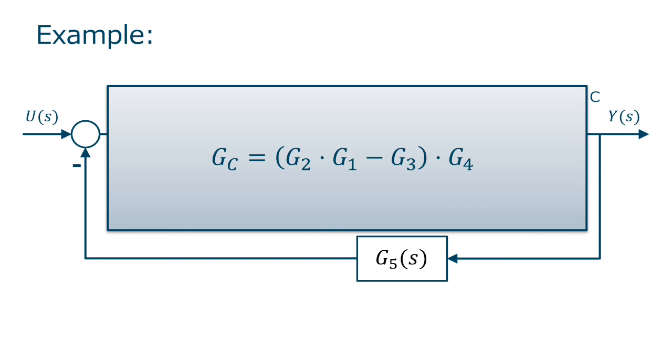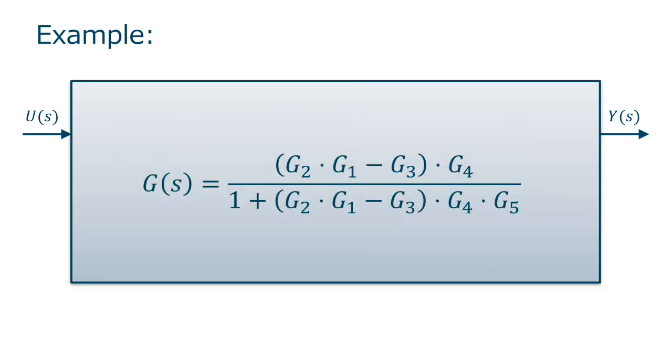Finally, we can see that now we have a feedback loop with G5 in the feedback path. And so the final result using the formula will be G2, G1, minus G3, times G4, on top. And then on the denominator, one plus, plus because we had negative feedback, one plus G2, G1, minus G3, times G4, times G5. In the practical sessions, we will do more examples, such as these.